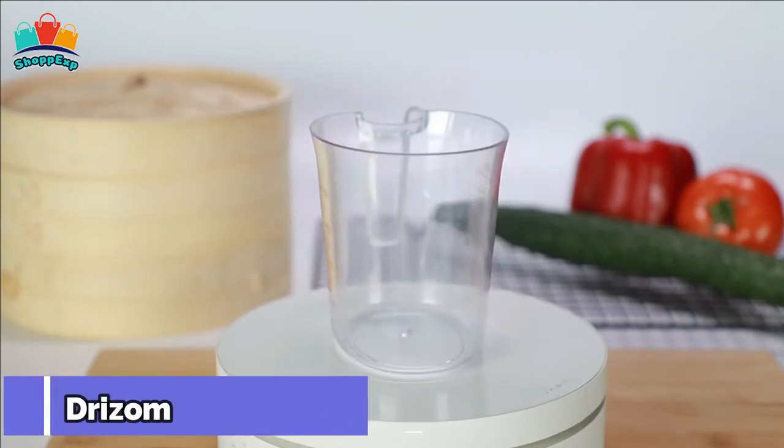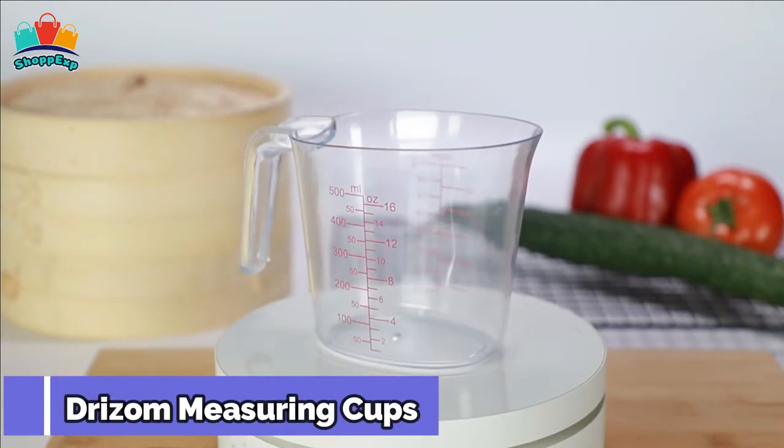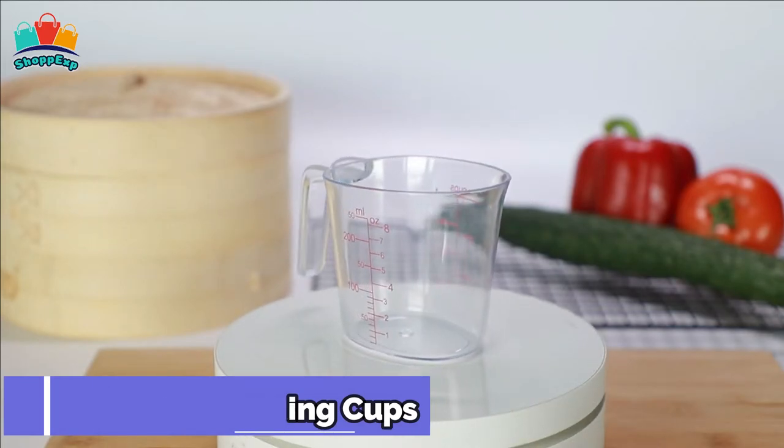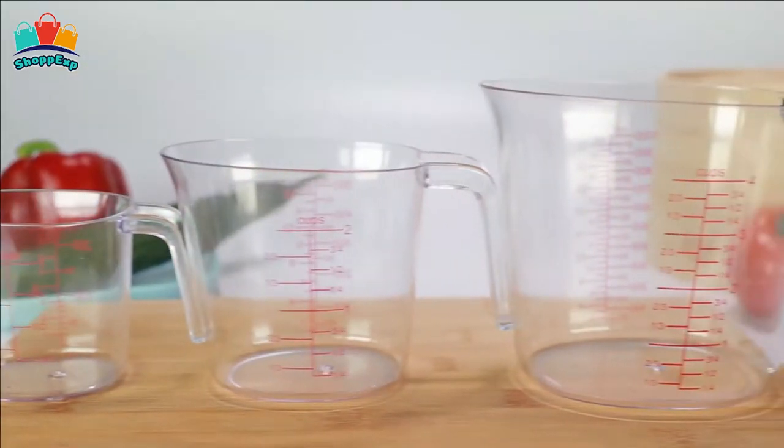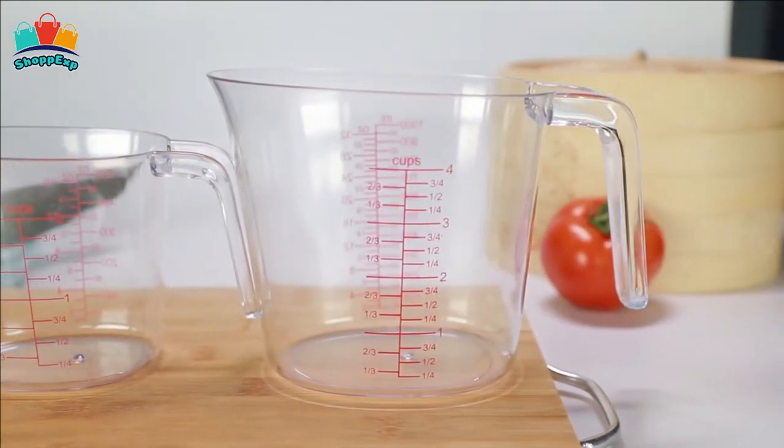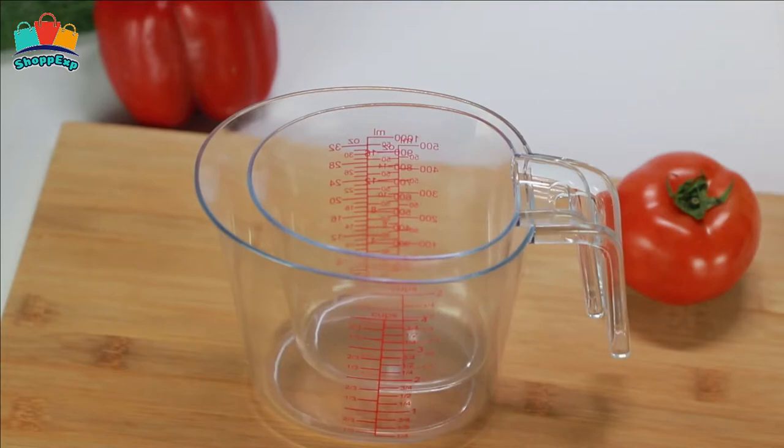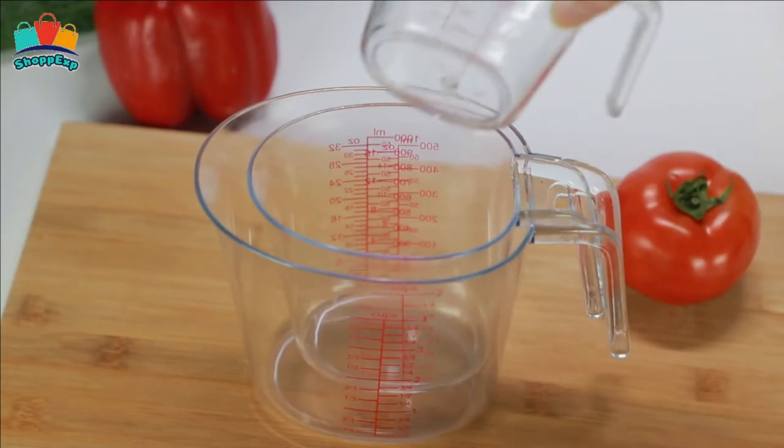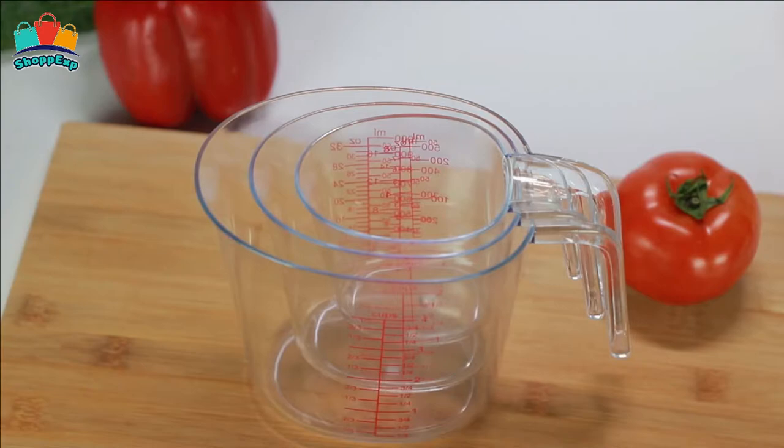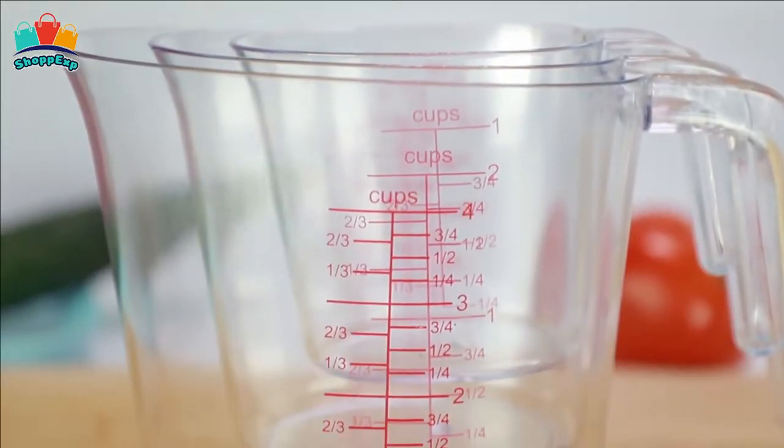The Drizm measuring cup set lets you deftly prepare homemade breakfasts, lunches and dinners to tantalize your family's taste buds. Everything you need in one simple solution. It helps you cook and prepare food faster and more conveniently. These Drizm three-piece plastic prepware measuring cups set is a worth buying household product.